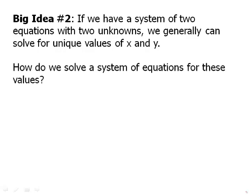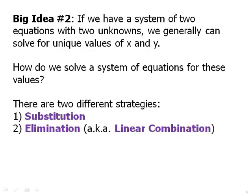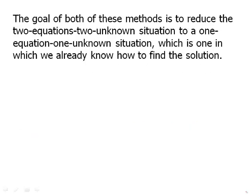How do we solve a system of equations for these values? There are two strategies. One is substitution, and the other is called either elimination. Some sources also call it linear combination. I'll be calling them substitution and elimination. The goal of both of these methods is to reduce the two equations, two unknowns situation, to a one equation, one unknown situation, which is one in which we already know how to find the solution. So what we're doing, and this is often true of mathematics, we're turning a problem we don't know how to solve into a problem we do know how to solve.